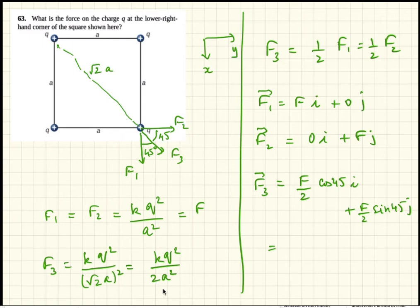So F over 2 root 2 i plus F over 2 root 2 j. F3 is that.